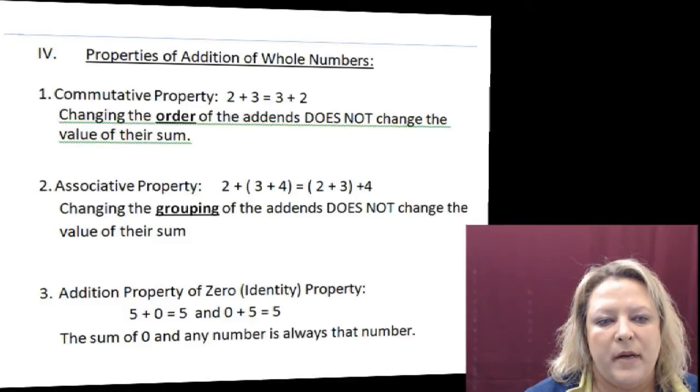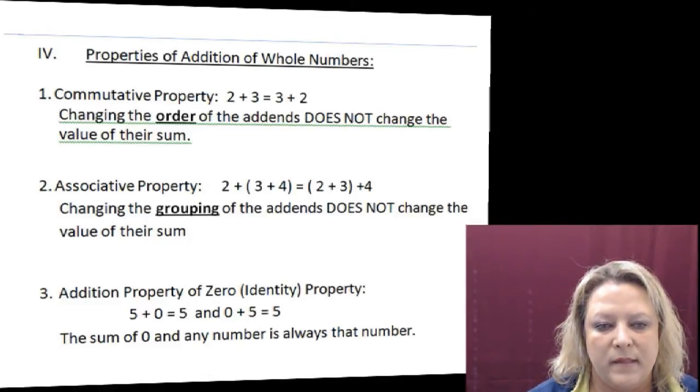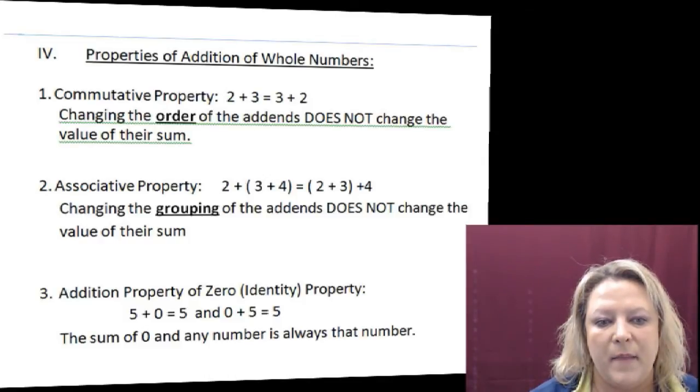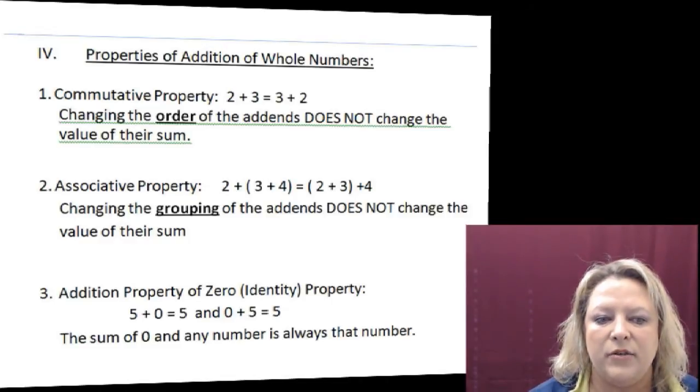Also associative property. When you think of that, all you're doing is you are associating, talking to two people or two numbers associating together. In the first problem, the 3 and the 4 are grouped in parentheses. So those are the two that are talking together, and they make 7, plus the outsider, which is 2, and that would make 9. When you look at the other side of the equation, it says 2 plus 3 would be in the parentheses. They are talking to each other. So that would be 2 plus 3 is 5, plus the outsider, 4, would still make 9. So it does not matter the order that you add them in. You still get the same thing.